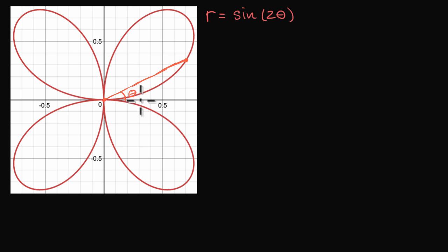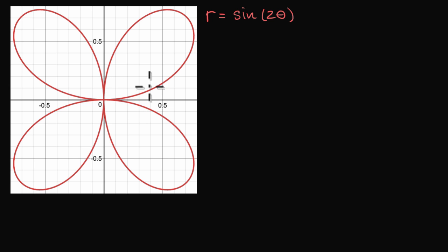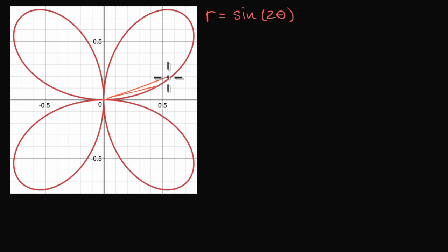Just to familiarize ourselves with this curve, let's see why it's intuitive. When theta is zero, r is going to be zero — sine of two times zero is just zero, so we're just at the origin. Then as theta gets larger, our r gets larger, and so we start tracing out this petal of this flower or clover-looking thing.